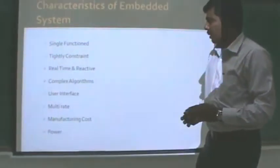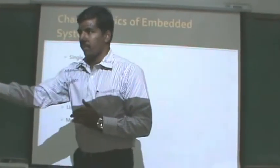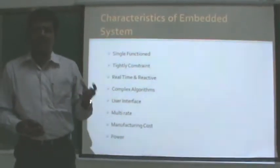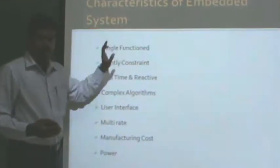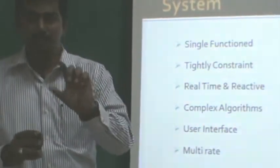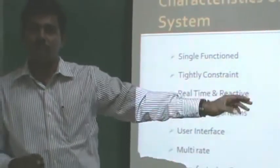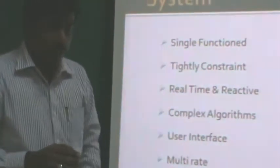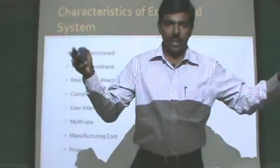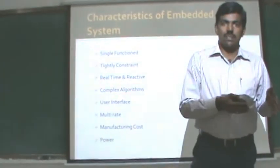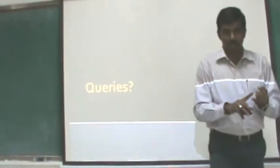The characteristics of an embedded system are important to understand. The first is single function — it will do only one task. For example, a digital camera cannot be used for washing clothes; it can only be used for taking photographs. The second characteristic is constraints. Can we have a digital camera weighing 15 kg, or a mobile phone weighing 10 kg? These are constraints, and they apply to cost, size, and power.